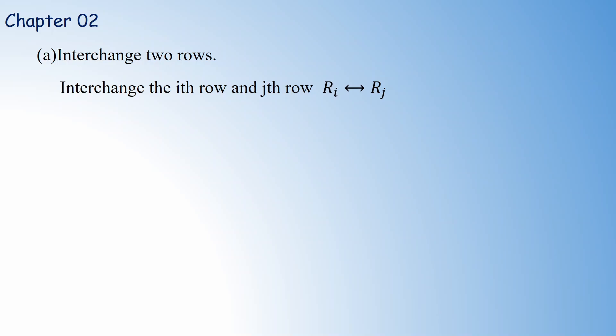The first row operation is interchanging two rows. If we interchange the i-th row and j-th row, we denote the i-th row by Ri and j-th row by Rj. Since we are interchanging these two rows, we denote it by the double arrow notation: Ri ↔ Rj.